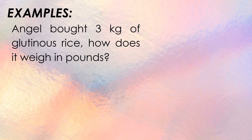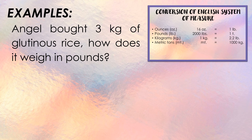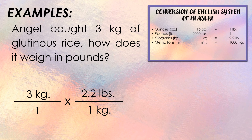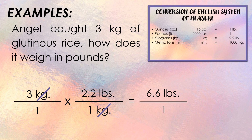Second word problem: Angel bought 3 kilograms of glutinous rice. How much does it weigh in pounds? Since we have kilograms and need pounds, use the formula: 1 kilogram equals 2.2 pounds. Write 3 kilograms over 1, place 1 kilogram in the denominator and 2.2 pounds in the numerator. Cancel the unit 'kilograms,' then multiply: 3 times 2.2 pounds equals 6.6 pounds over 1. Therefore, 3 kilograms is equal to 6.6 pounds.